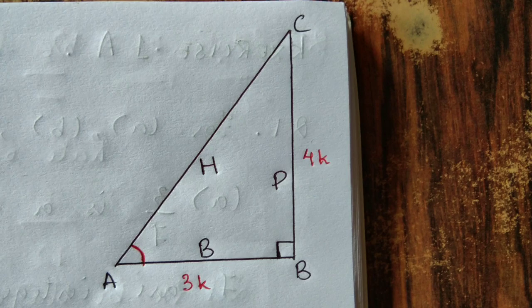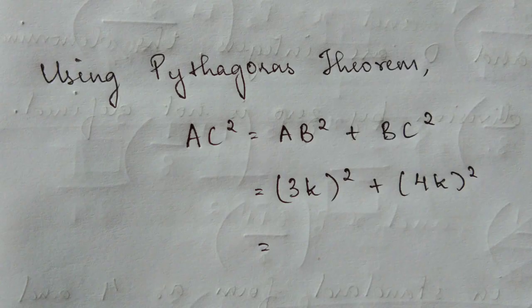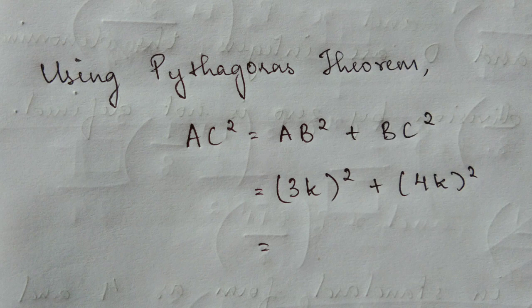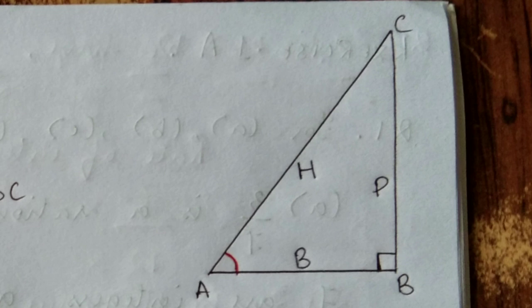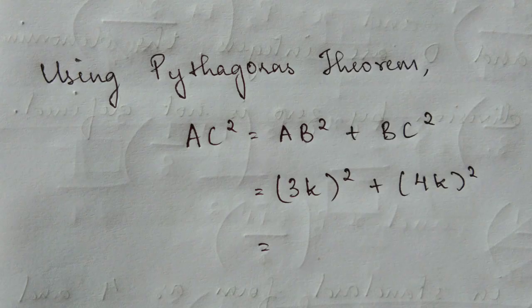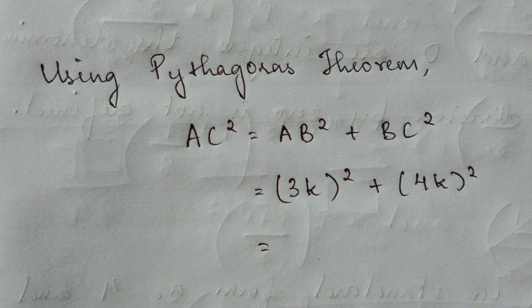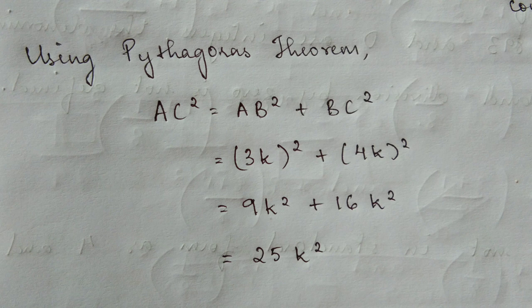Using Pythagoras Theorem, we know that hypotenuse squared equals the sum of the other two sides squared. So AC squared equals AB squared plus BC squared, which equals (3k) squared plus (4k) squared, equals 9k squared plus 16k squared, which equals 25k squared.